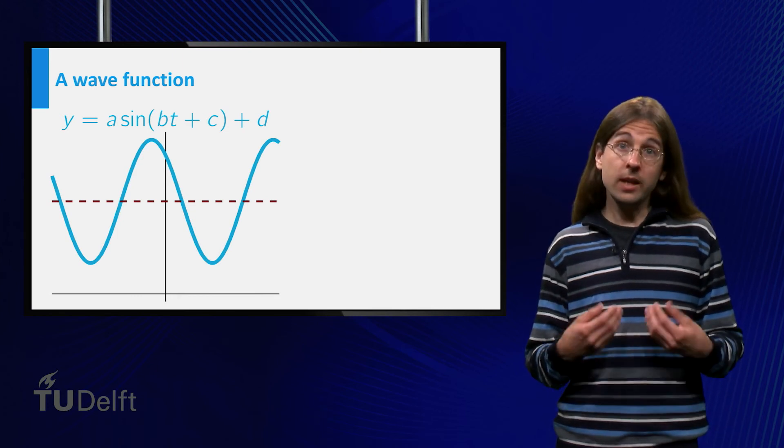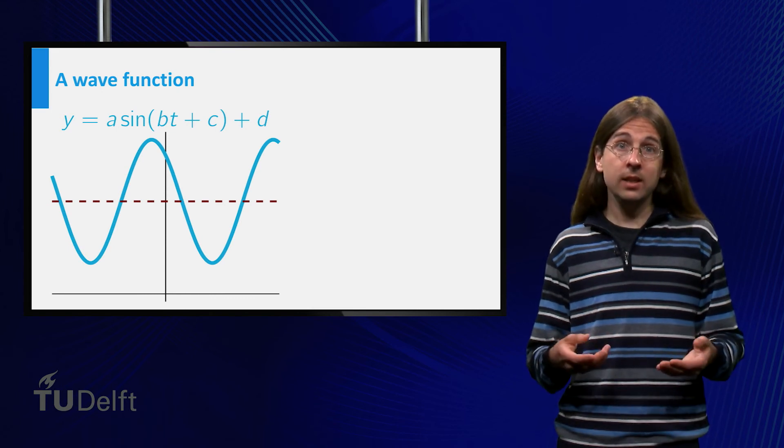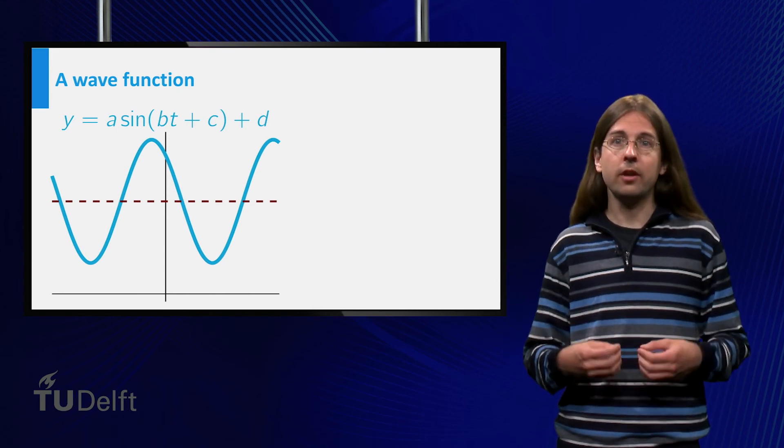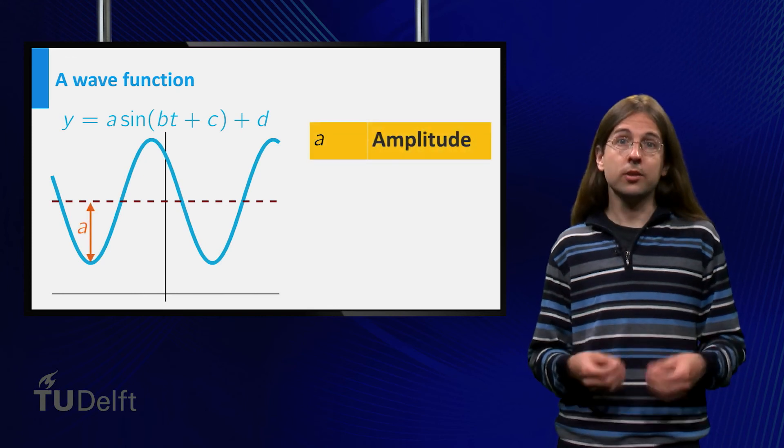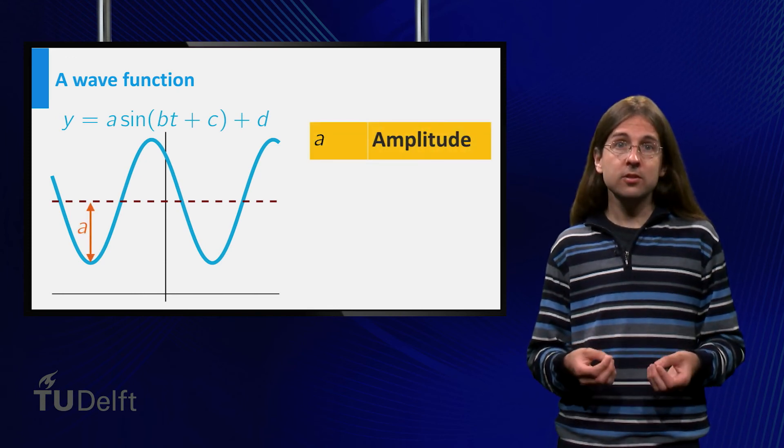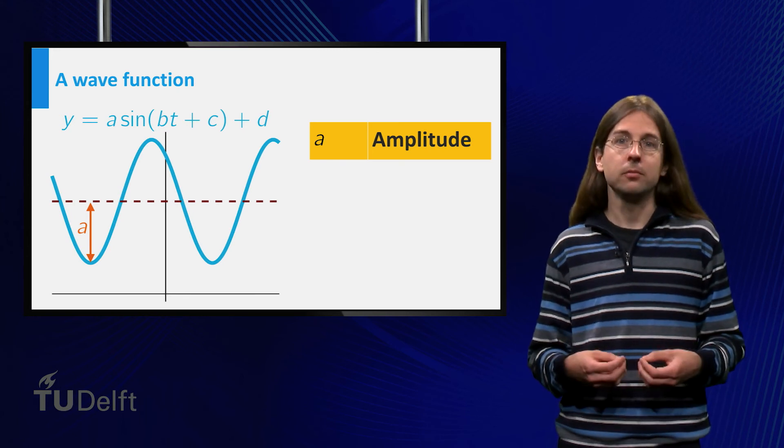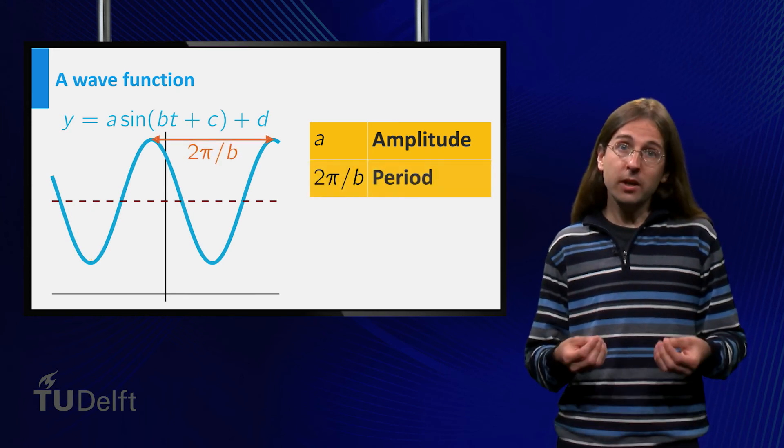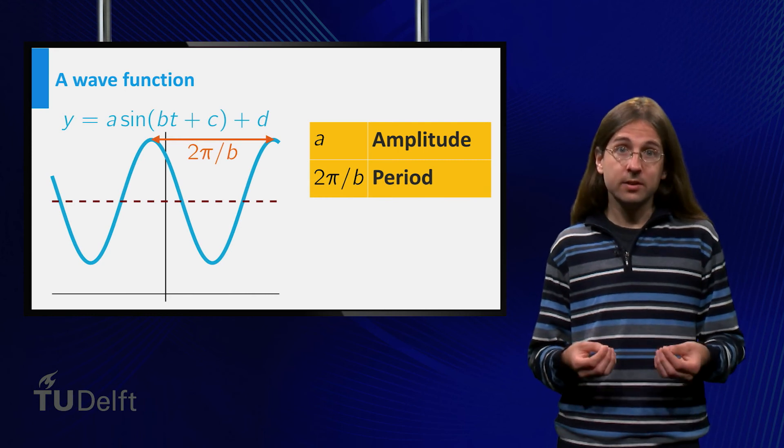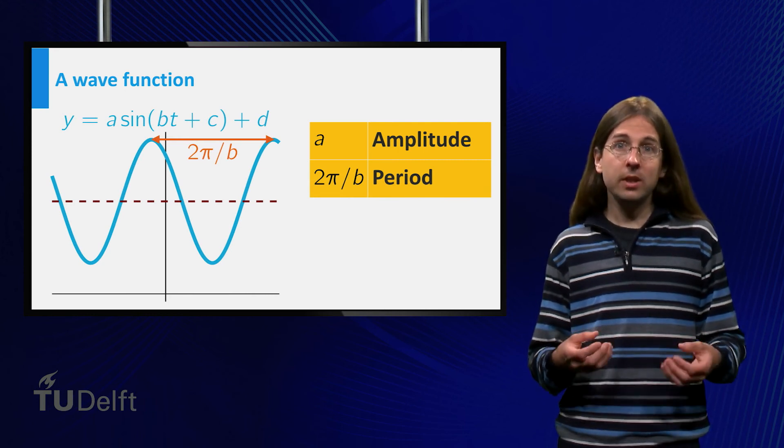The values a and b correspond to scaling in the vertical and horizontal directions. a is called the amplitude and gives the difference between the minimum or maximum of the wave and the average value. 2pi over b is called the period, it is the time between two waves.